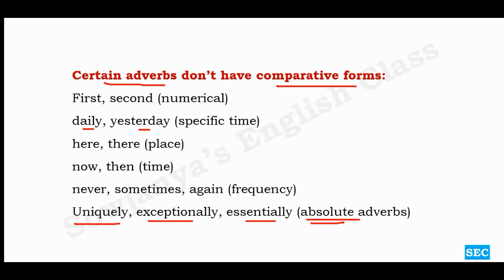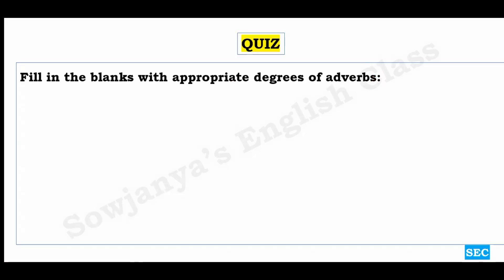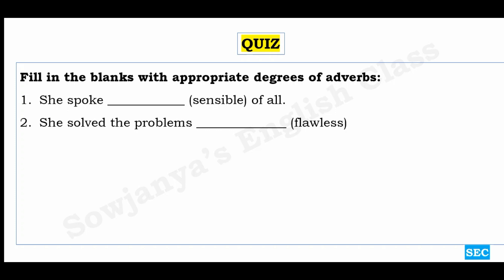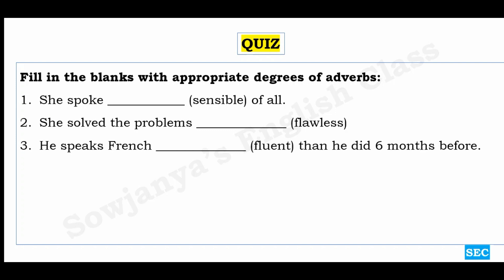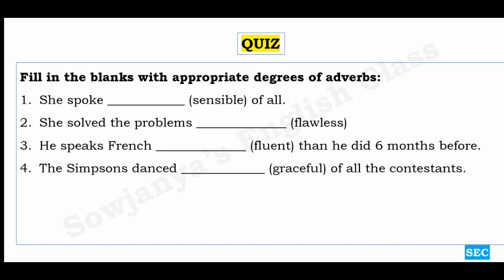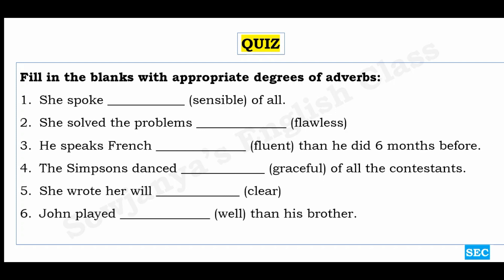Now let us proceed to our simple quiz of the day. Fill in the blanks with the appropriate degrees of adverbs. One: 'She spoke ___ of all' (word: sensible). Two: 'She solved the problems ___' (word: flawless). Three: 'He speaks French ___ than he did six months before' (word: fluent — two times compared). Four: 'The Simpsons danced ___ of all the contestants' (word: graceful). Five: 'She wrote her will ___' (word: clear). Six: 'John played ___ than his brother' (word: well). Hope you all enjoyed the lesson — meet you soon with another interesting video!